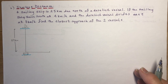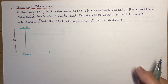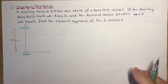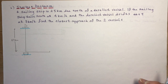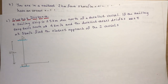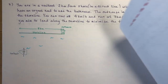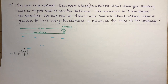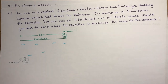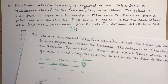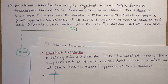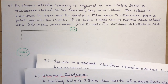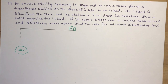Optimization problems part 3. Today I'm going to do an example of the shortest distance. We're going to do how to minimize the time to an outhouse, and how to minimize the cost of laying a cable from an island to the mainland.